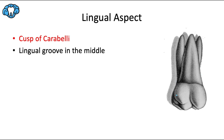From the lingual aspect, you can see the giant palatal root sticking up like a mountain peak. We also get a good view of the cusp of Carabelli, a special feature unique to the maxillary first molar, discovered by a dentist named George Carabelli. It develops from a fifth developmental lobe and is attached to the mesiolingual cusp. The lingual groove is centered on the tooth, in line with the palatal root, and also migrates distally in the second molar.